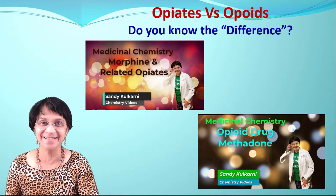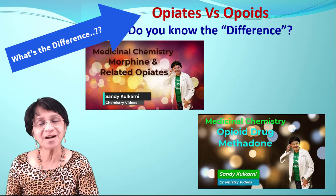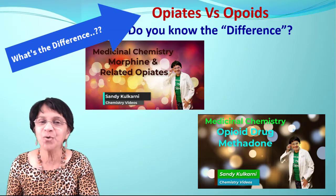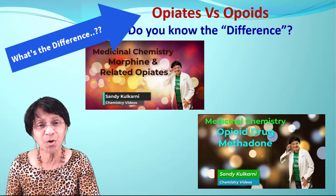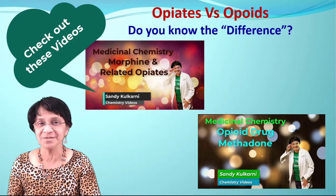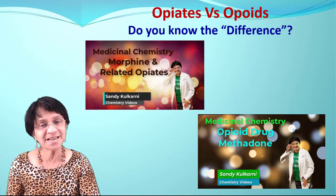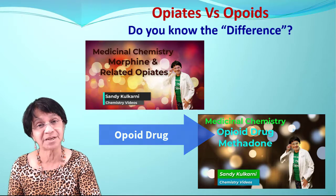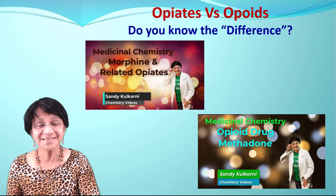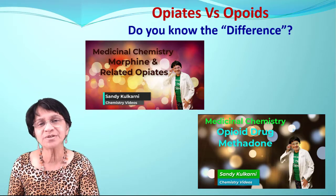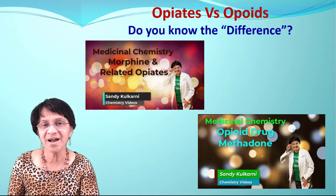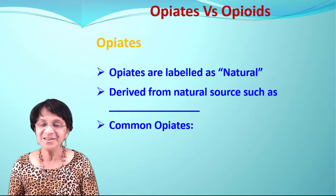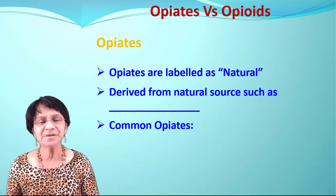In this video we're going to talk about a very critical and important topic in medicinal chemistry: opiates and opioids. Are they different, and if so, what is the difference? I have two different videos on medicinal chemistry — one on morphine and related opiates, and the second on the opioid drug methadone. Yes, there is a difference, even though we use these terms loosely. Let's talk about opiates first.